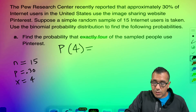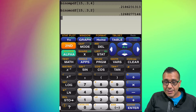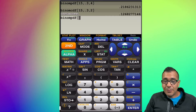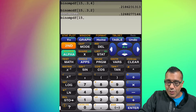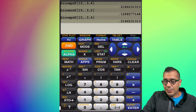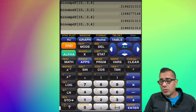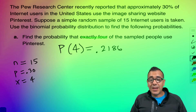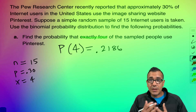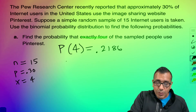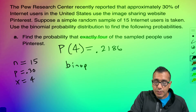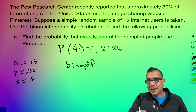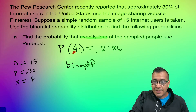Because it says 'exactly four,' we know to use binomial PDF. On the calculator: second, distribution, binomial PDF, enter 15 comma 0.3 comma 4. Rounding to four decimal places gives us 0.2186. That is the probability of finding exactly four users who use Pinterest.